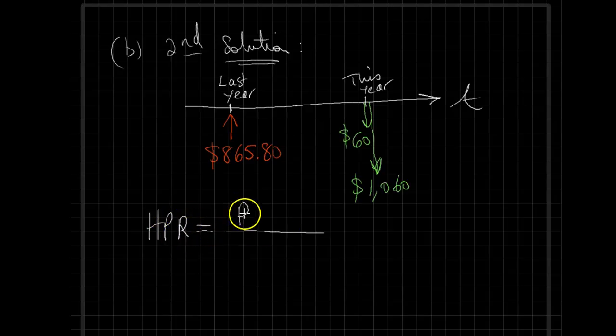So it's possible to solve the problem simply using the holding period return formula. In that case, that would be the final price minus the initial price plus any additional income, in that case we have a coupon payment during the final year, all divided by the initial investment.